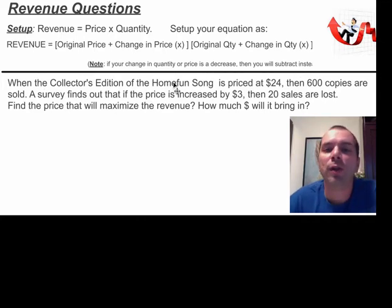So when the collector's edition of the Homefun Song, which you may or may not know the song, but it's a very famous song that I made, is priced at $24, then 600 copies are sold. If surveys find out that the price is increased by $3, so if I charge $27, then 20 sales are lost, or I'll sell 580.